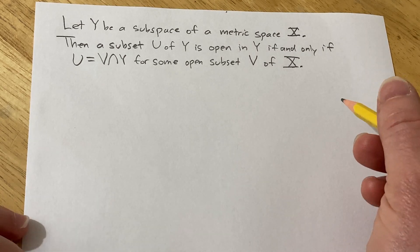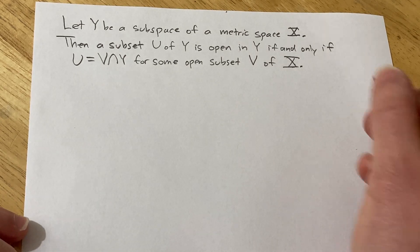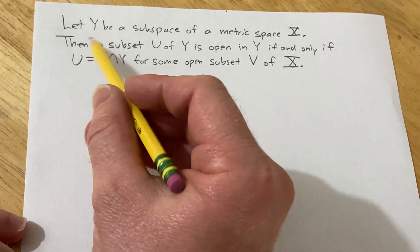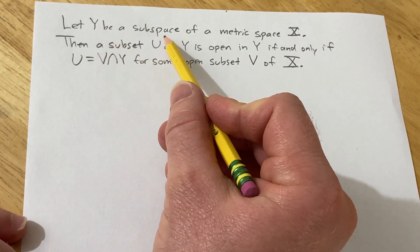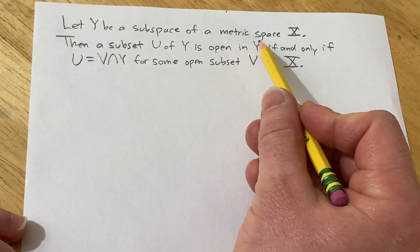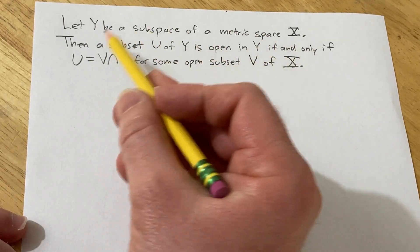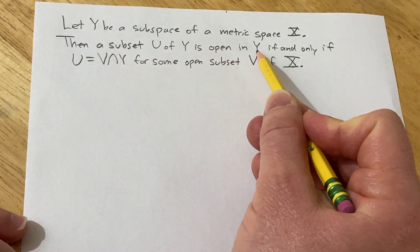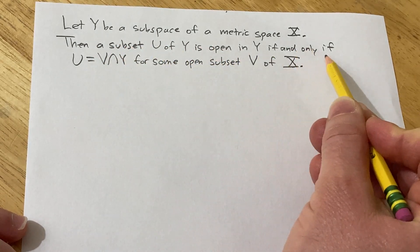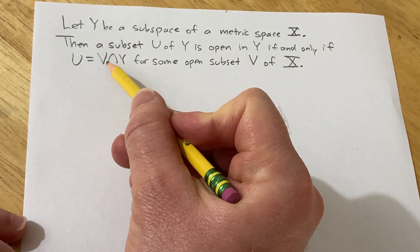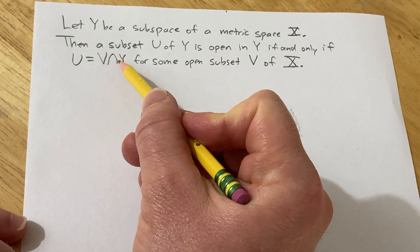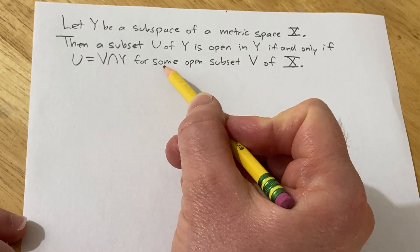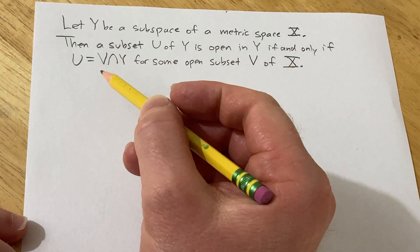In this video we're going to give a very careful proof of the statement. Let Y be a subspace of a metric space X. Then a subset U of Y is open in Y if and only if U equals V intersected with Y for some open subset V of X.